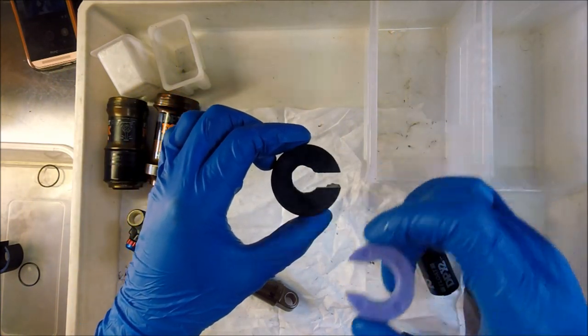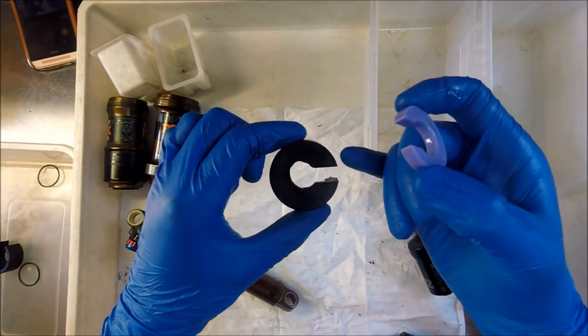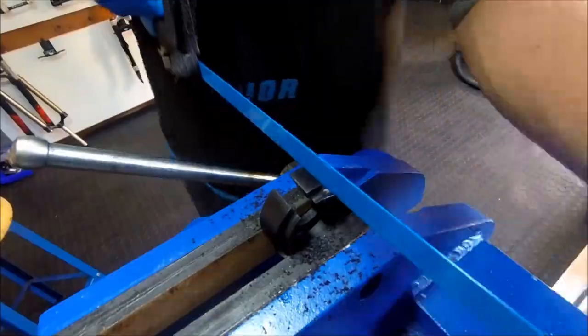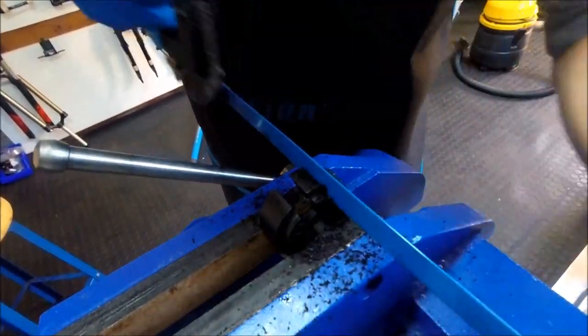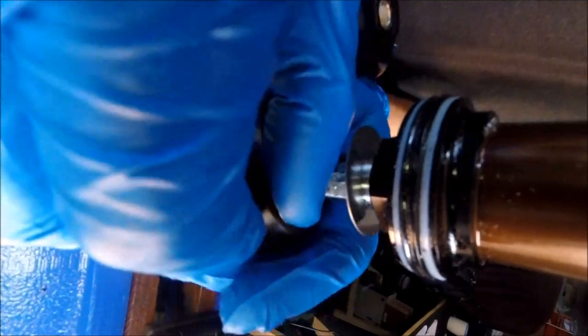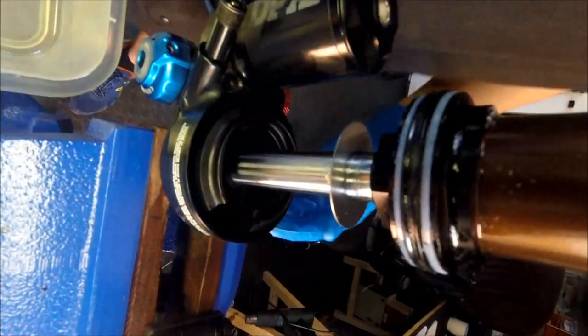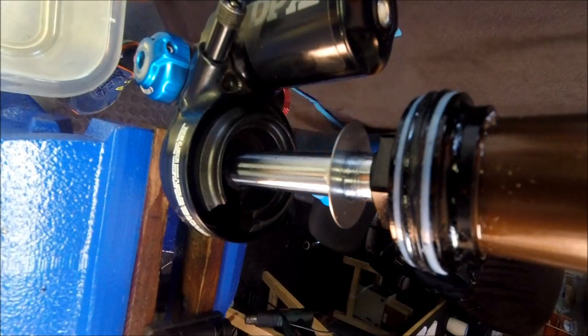So even if the hole is correct we first need to take a hacksaw and cut a tiny bit out here so we can get it over the shock shaft. Okay, let's see if she fits.